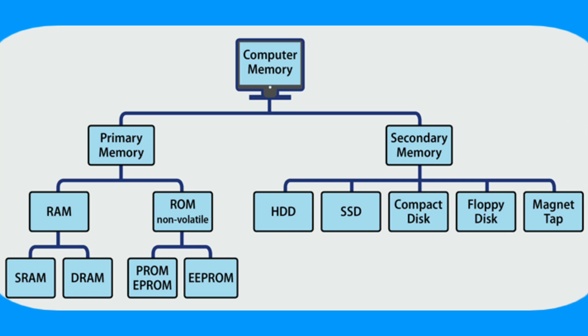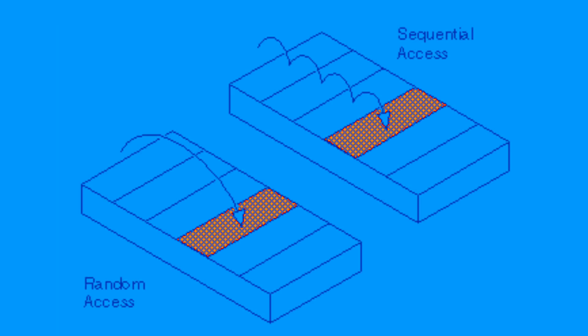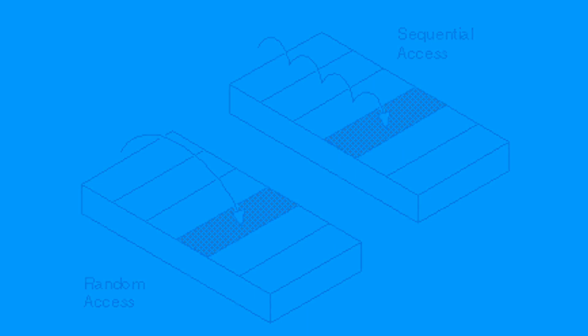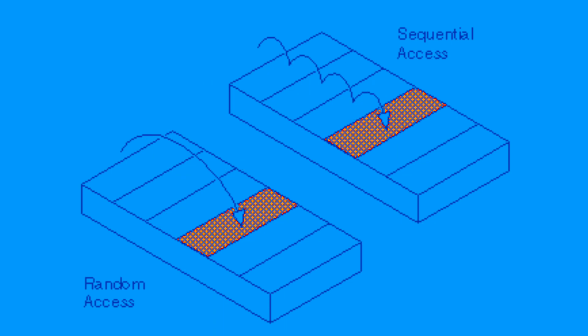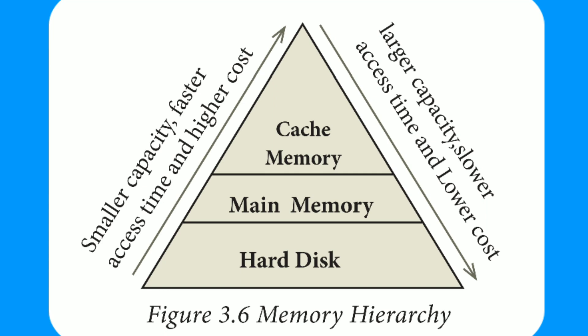Let us now see the topic of Memory Hierarchy. A memory is just like a human brain — it is used to store data and instructions. Computer memory is the storage space in a computer where data and instructions are stored. There are two types of accessing methods: one is sequential access and another is random access. In sequential access, memory is accessed in an orderly manner from start to end. In random access, any byte of memory can be accessed directly without navigating through previous bytes. Different types of memory devices are arranged according to capacity, speed, and cost.